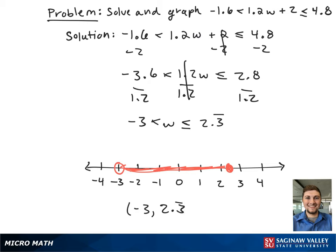In interval notation, this looks like an open bracket from negative 3 to 2.3 repeating with a closed bracket.